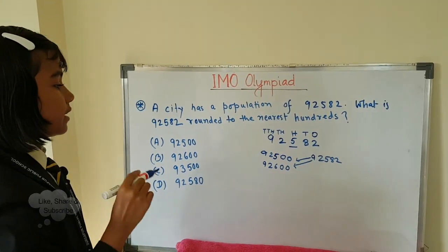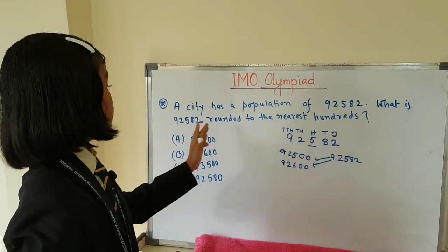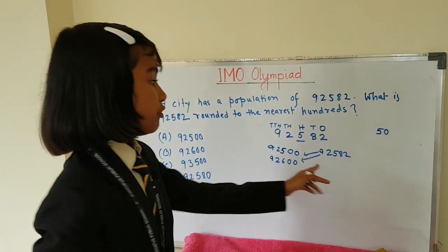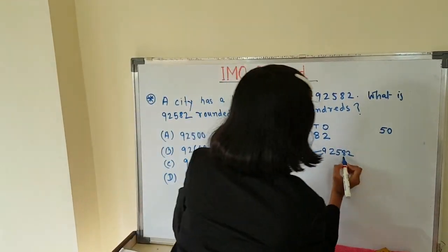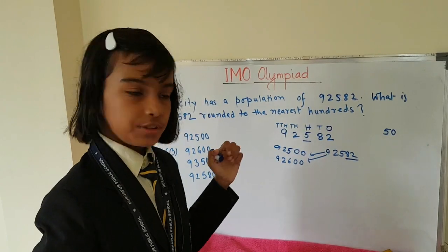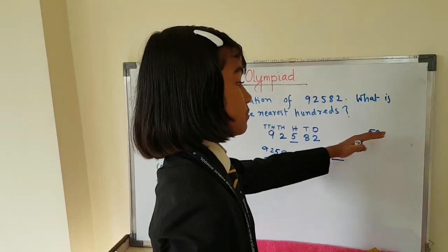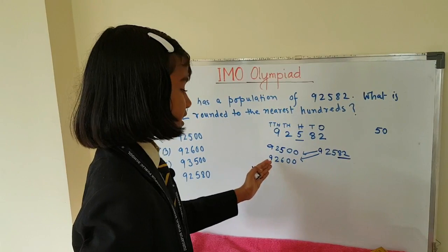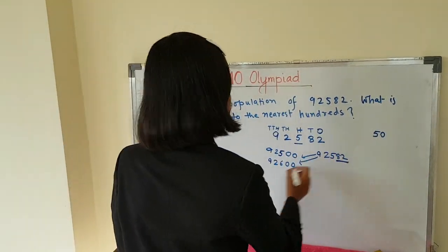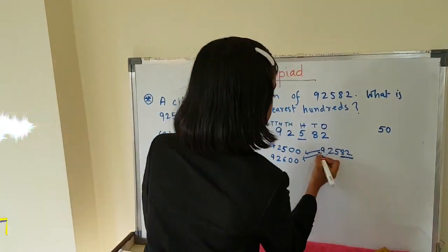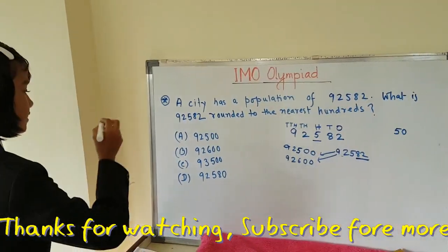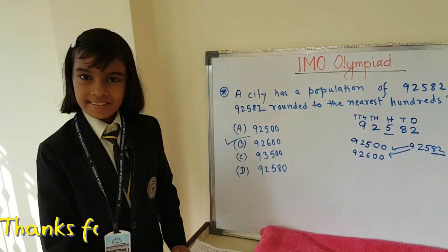To find the nearest hundred, we look at the tens digit. If it is less than 50, the answer would be 92,500. But if it is 50 or more, the answer is 92,600. Here the tens digit is 82, which is more than 50, so the answer is 92,600 — because 92,582 is nearer to 92,600. The answer is 92,600.